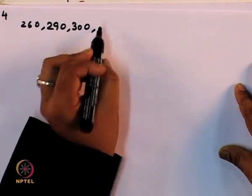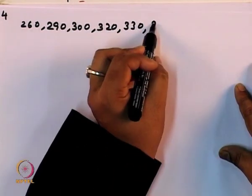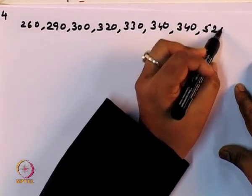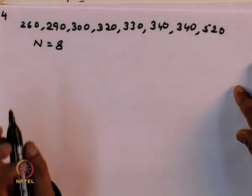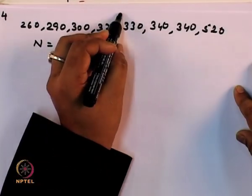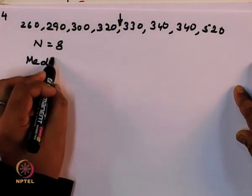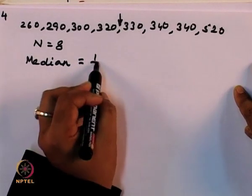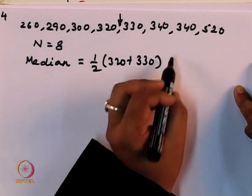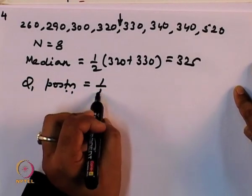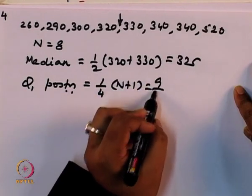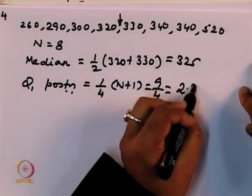Performing the necessary calculations: with n equal to 8, the sorted data is 260, 290, 300, 320, 330, 340, 340, 520. The median position falls between the 4th and 5th values, giving a median of (320 + 330)/2 equal to 325. The Q1 position is (1/4) times (n+1) equal to 9/4 equal to 2.25.